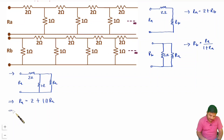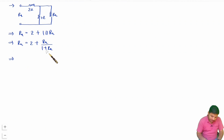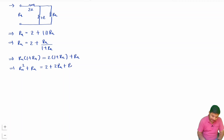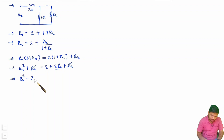Therefore RA = 2 + RA / (1 + RA). Taking LCM: RA × (1 + RA) = 2 × (1 + RA) + RA. Simplifying: RA² + RA = 2 + 2RA + RA. Rearranging into a quadratic equation: RA² − 2RA − 2 = 0.